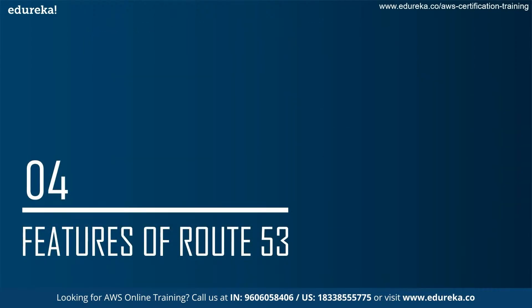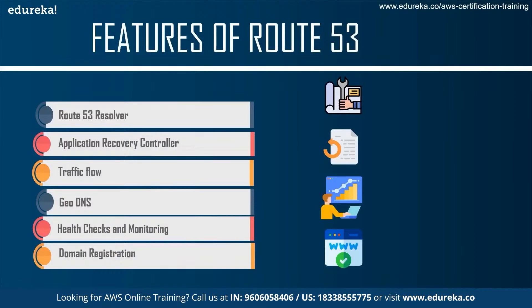Let's talk about some key features of Route 53. The first feature is the Route 53 Resolver, which is used to create conditional forwarding rules and DNS endpoints to resolve custom names mastered in Amazon Route 53 private hosted zones. There are public hosted zones and private hosted zones; the Route 53 Resolver is mostly used when there is a private hosted zone which needs a certain DNS endpoint.